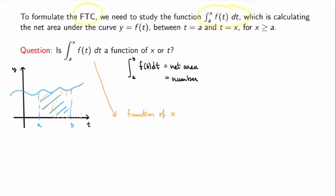It's not a function of t, it's a function of x. Let's check this by looking at a simple example. Consider the integral from a to x of the function 1 times dt. Using properties of definite integrals, this is just going to be x minus a. And indeed, what you get is a function of x, not a function of t.